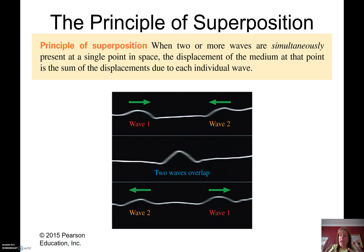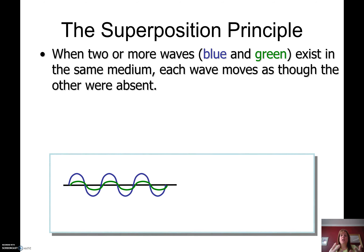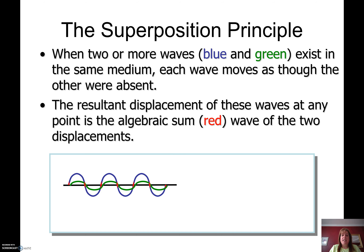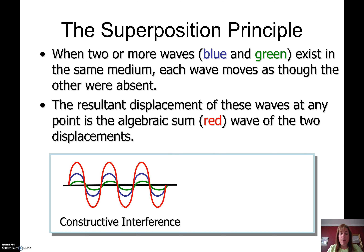When waves overlap, they can have constructive interference. Here I have a wave that's blue and a wave that's green in the same medium, and they move as if each other wasn't there. But the medium knows they're there, so what happens is I get this adding up of the waves. The peaks and troughs are lined up, so I get constructive interference — bigger amplitude waves.